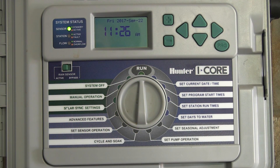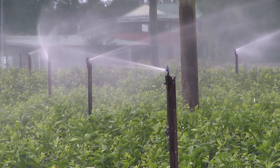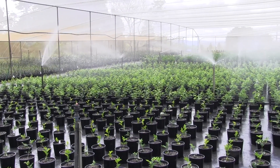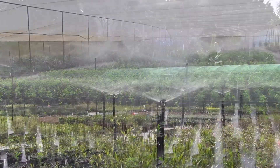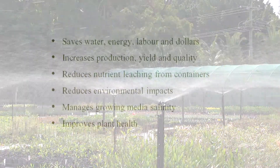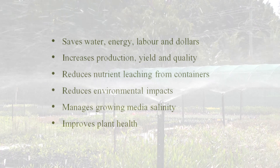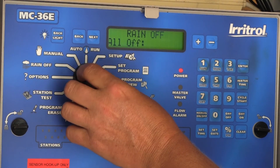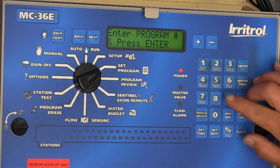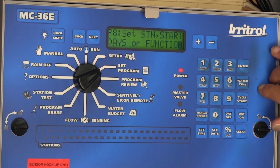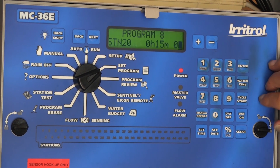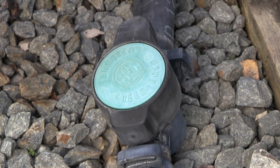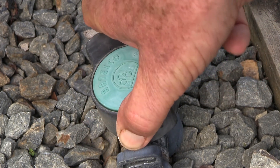Irrigation scheduling refers to how long, how often, and when an irrigation system is operated to replenish the amount of water lost from a container since the last irrigation event. Effective irrigation scheduling has the following benefits. Monitoring and refining an irrigation schedule is one of the most cost-effective ways of improving water use efficiency. The following video contains information on the factors that affect irrigation scheduling and some methods that can be used to monitor it more effectively.